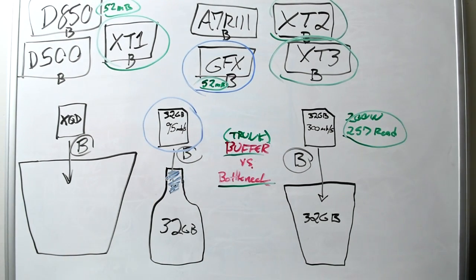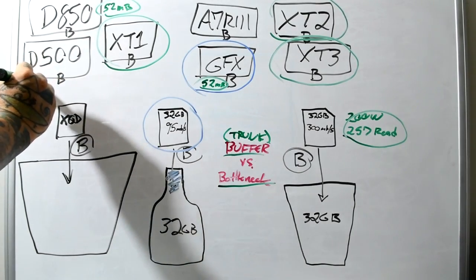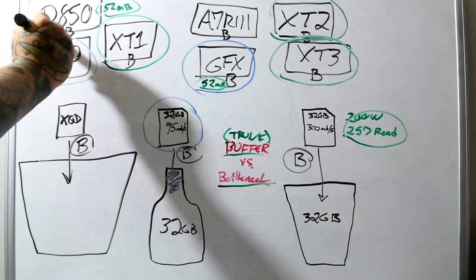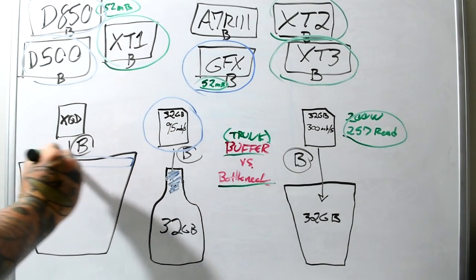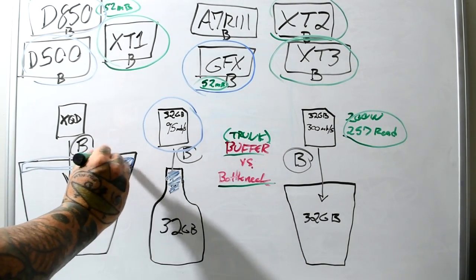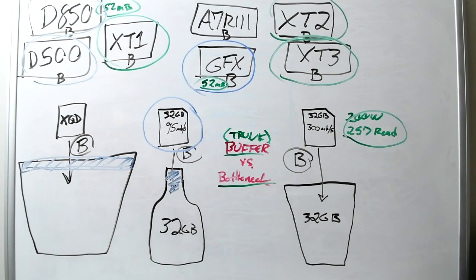It's not an issue with the enormous files from the medium format GFX because you don't need fast cards in the GFX. What you have here on these 95 megabit per second cards, which are really cheap, is you have this bottleneck right here. Now, everybody knows that the Nikon D500, which uses XQD cards and an SD card, same as the Nikon D850, we have this enormous mouth or portal.